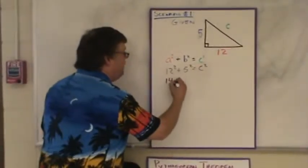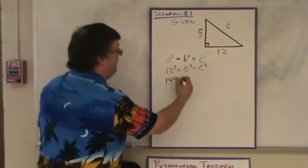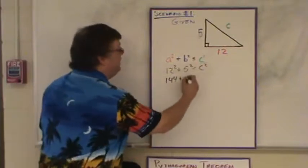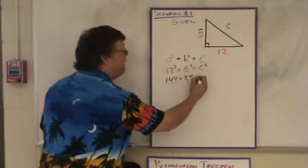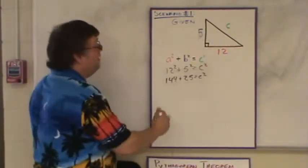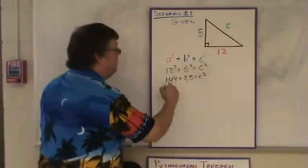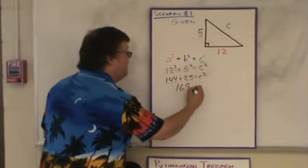Twelve squared is one hundred forty-four. That's twelve times twelve. Five squared is five times five, which is twenty-five. Then we add the two together. One forty-four and twenty-five gives you one sixty-nine.